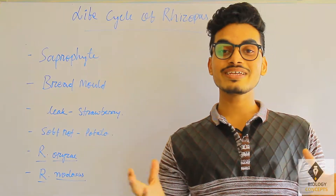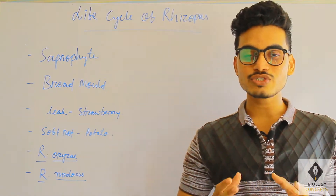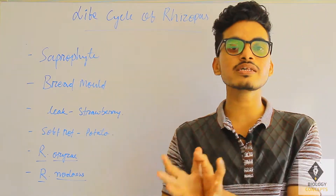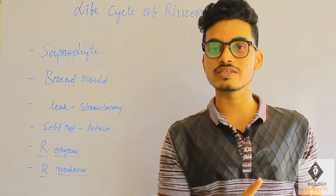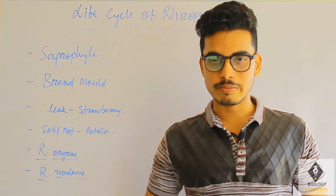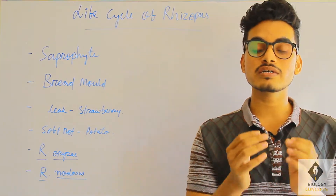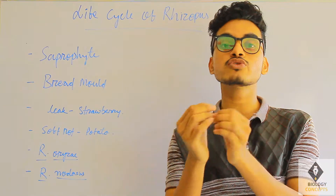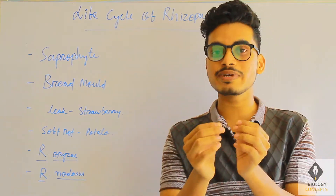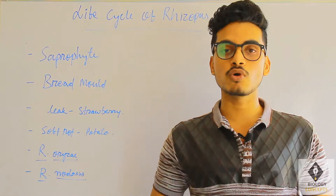Good morning everybody, my name is Falgun and today we are going to talk about the life cycle of a Rhizopus. Rhizopus stolonifer is called as bread mold. It exhibits the saprophytic mode of nutrition.